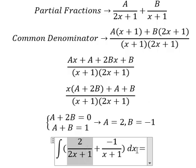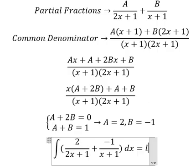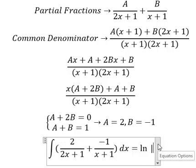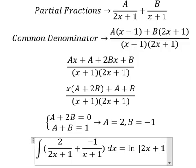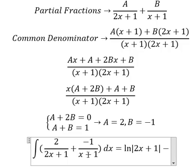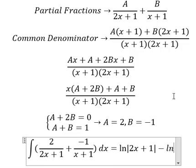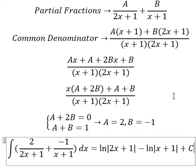So the integration of this one gives us ln of the absolute value of (2x + 1) and the next term. This is the final answer.